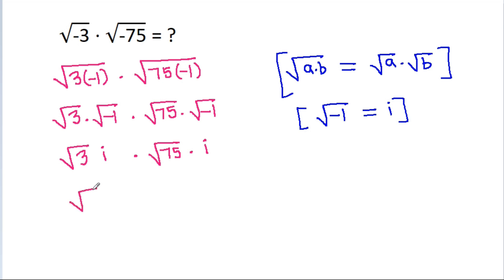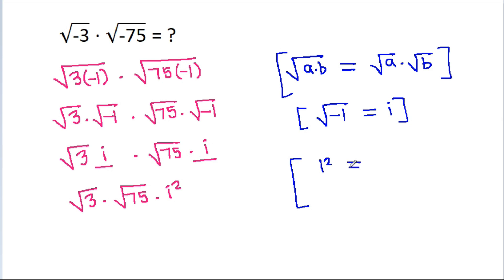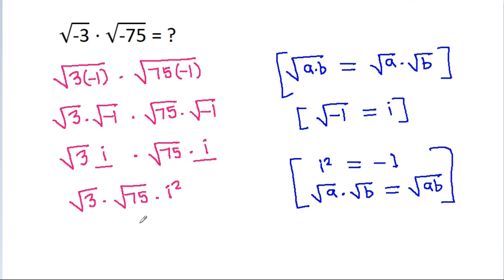And it is square root of 3 times square root of 75 times iota times iota, which will be iota squared. And iota squared is equal to minus 1, and square root of a times square root of b is equal to square root of ab. So, this will be equal to square root of 3 times 75, and iota squared will be minus 1.